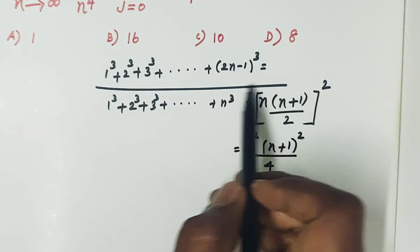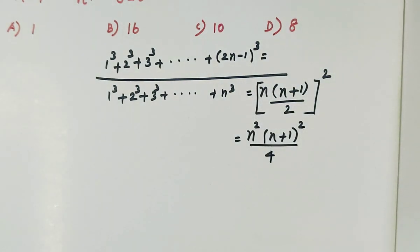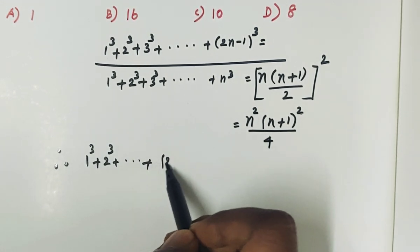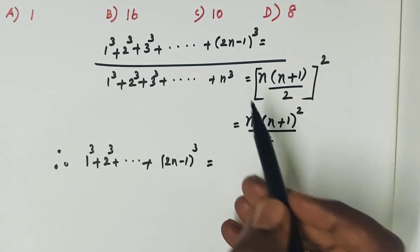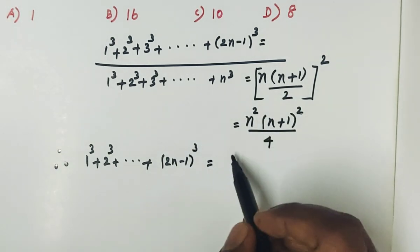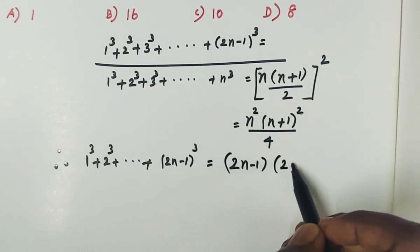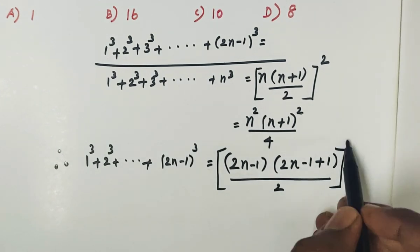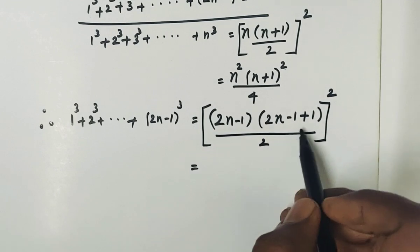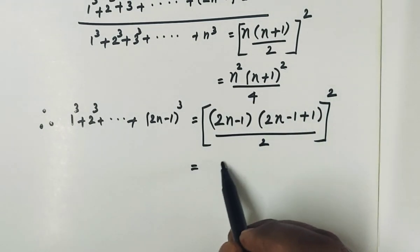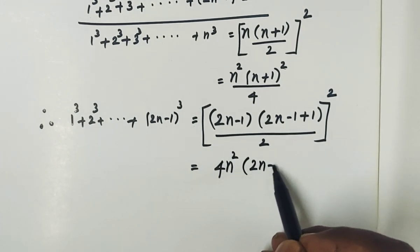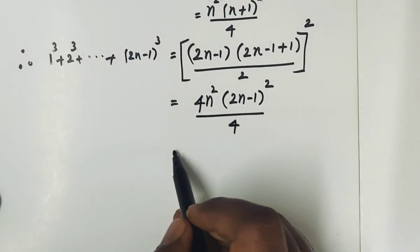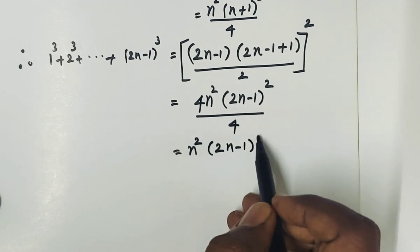Now instead of n, we substitute 2n minus 1. So in the formula, wherever n appears, we replace it with 2n minus 1. Therefore 1 cube + 2 cube + ... + (2n−1) cube equals (2n−1)(2n−1+1)/2 whole squared, which simplifies as: 2n−1+1 = 2n, so we get (2n−1) squared times 4n squared divided by 4, giving n squared (2n−1) squared.